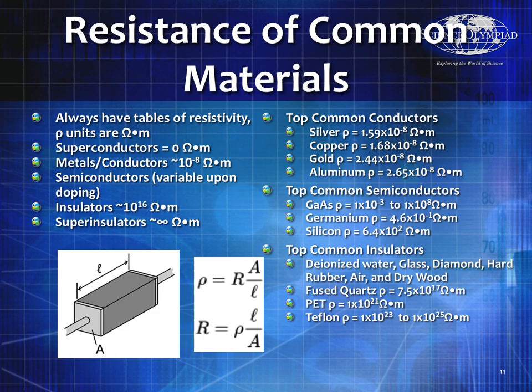Silver has a resistivity of 1.59 times 10 to the minus 8 ohm-meters — extremely low and very close to copper, but much more conductive than aluminum. Aluminum is still a good conductor but will heat up more due to higher resistance. Semiconductors like gallium arsenide, germanium, and silicon range around 10 to the minus 1 to 10 squared — seven to sixteen orders of magnitude higher than conductors. Insulators go as high as 10 to the 17th through 10 to the 25th — a ridiculous amount of resistance.